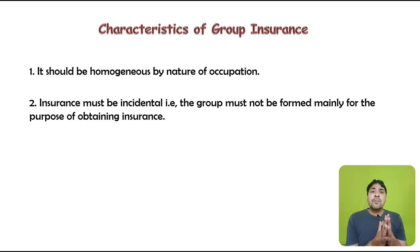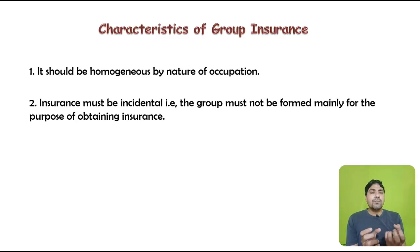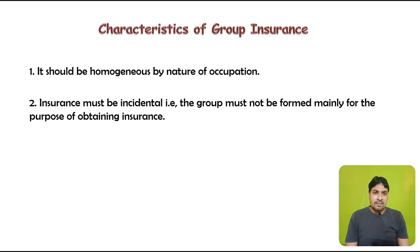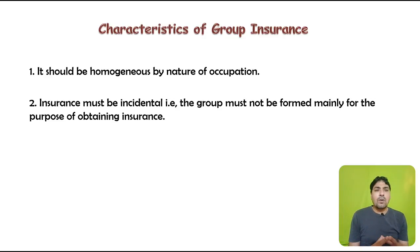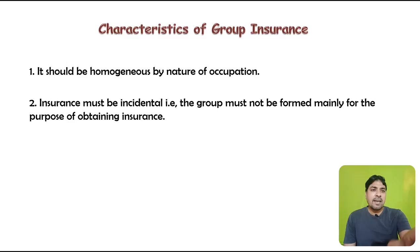The second characteristic is that insurance must be incidental — the group must not be formed mainly for the purpose of obtaining insurance. First, the group shall be formed, and later the group insurance can be availed. A group cannot be formed solely to create a group insurance policy; the group must pre-exist the insurance arrangement.